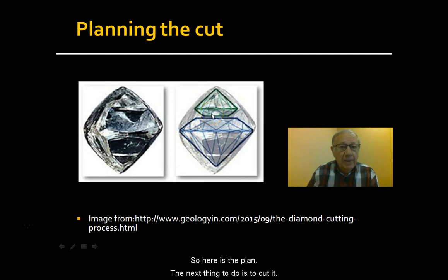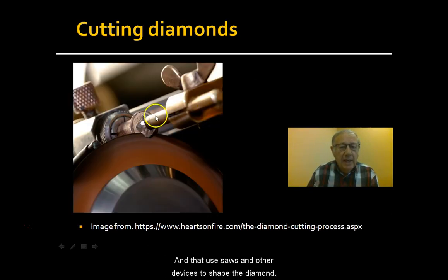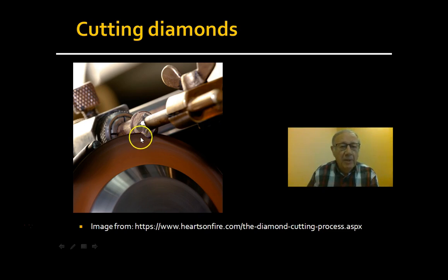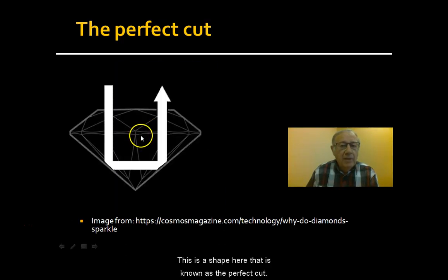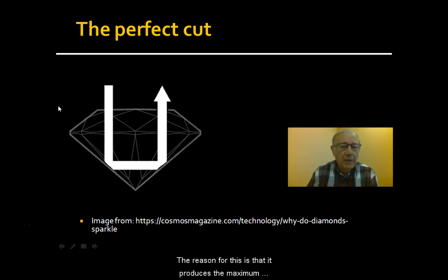They use saws and other devices to shape the diamond. This shape here is known as the perfect cut, and the reason for this is that it produces the maximum amount of sparkle.